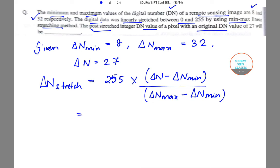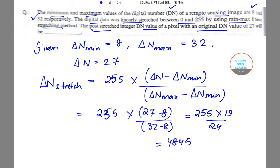This equals 255 times (27 - 8) divided by (32 - 8), which becomes 255 times 19 divided by 24. This equals 4845 divided by 24. The DN stretch becomes 201.88, so this will be the answer.